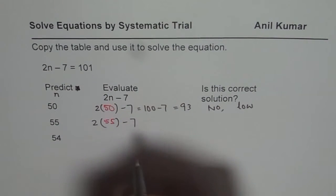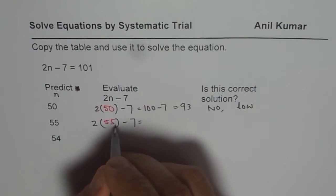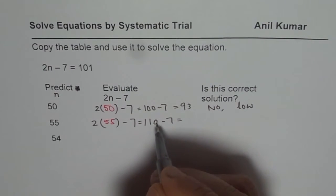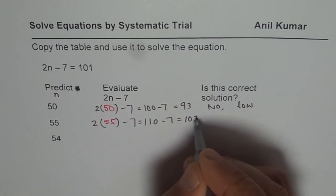We'll try for 55 and again calculate. Once you calculate, 2 times 55 is 110, and then you take away 7. So it is 10 more than the previous value. So 103 is what you get.